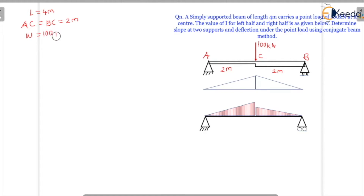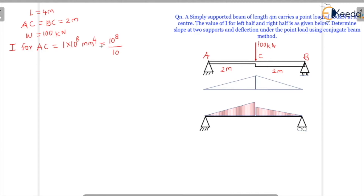Now, the I value given for the left half AC is 1 × 10⁸ mm⁴, which converts to 10⁻⁴ m⁴. For the right half BC, I is given as 2 × 10⁸ mm⁴, which similarly converts to 2 × 10⁻⁴ m⁴. So notice the left half has I and the right half has 2I.